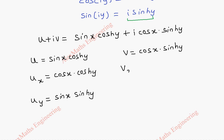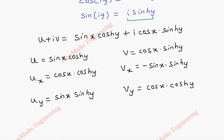Now v_x is the partial derivative of v with respect to x. Derivative of cos x is minus sin x, and y is treated as a constant, so sinh(y) stays as it is. Now v_y: x is treated as a constant, so cos x is written as it is. And sinh(y), its differentiation is cosh(y).